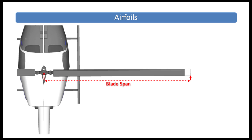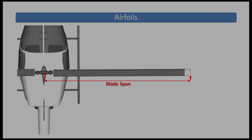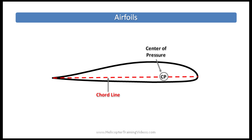Blade span is the distance from the tip of the blade to the center of the hub, or the center of rotation. Center of pressure is where the center of all the aerodynamic forces are said to act. It's always located on the cord line, and it varies in position along that cord line depending on the airfoil shape, and can be modified by the angle of attack — we'll cover that later.